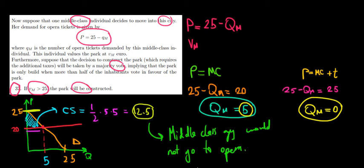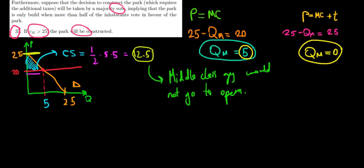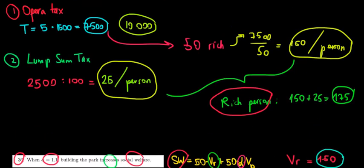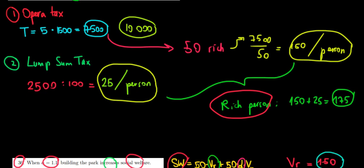In other words, he would not contribute the opera tax, but he would contribute the lump sum tax. And the lump sum tax we saw from a couple of videos ago is equal to 2,500 euros in total divided by a hundred people. It was 25 euros per person.